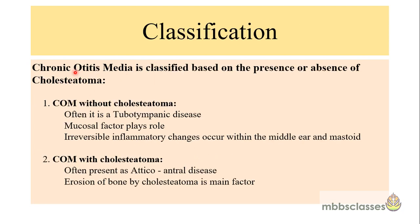Chronic otitis media is classified based on the presence or absence of cholesteatoma. There are two varieties: COM without cholesteatoma and chronic otitis media with cholesteatoma. The first group, chronic otitis media without cholesteatoma, is often also called tubotympanic type of disease.